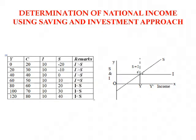For the determination of National Income using the Saving and Investment approach, you can see the table and diagram. C plus I equals AD, and C plus S equals AS. Since Y minus C equals S, with Autonomous Investment given as 10, at the point E in the diagram, S equals I. At the income level of 60, S equals I. Before this point, I is greater than S — as discussed, AD is greater than AS. After the equilibrium point, I is less than S.